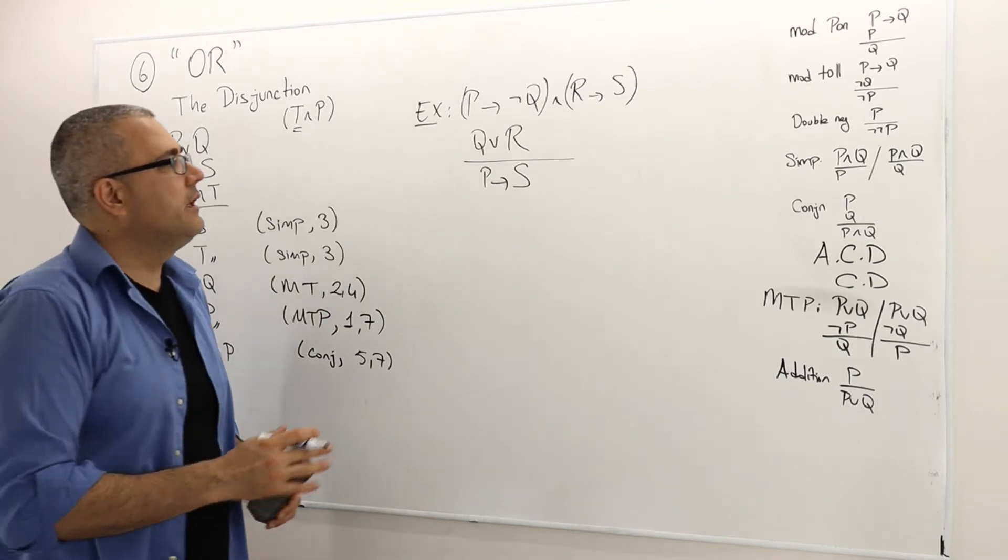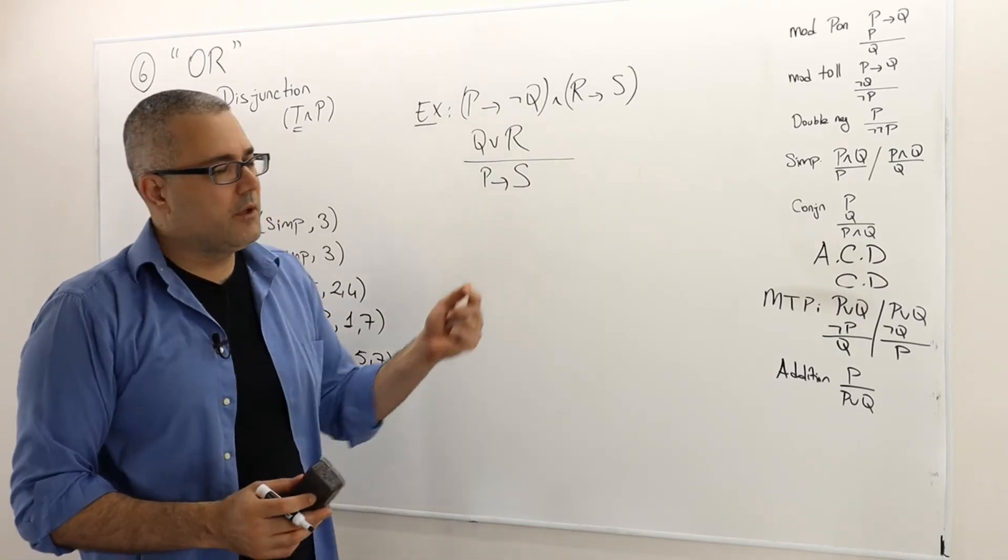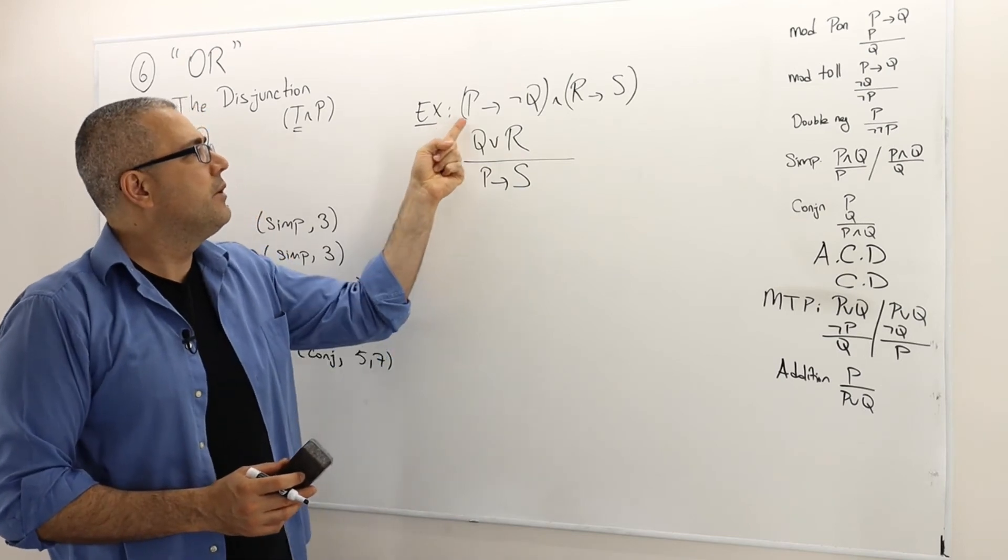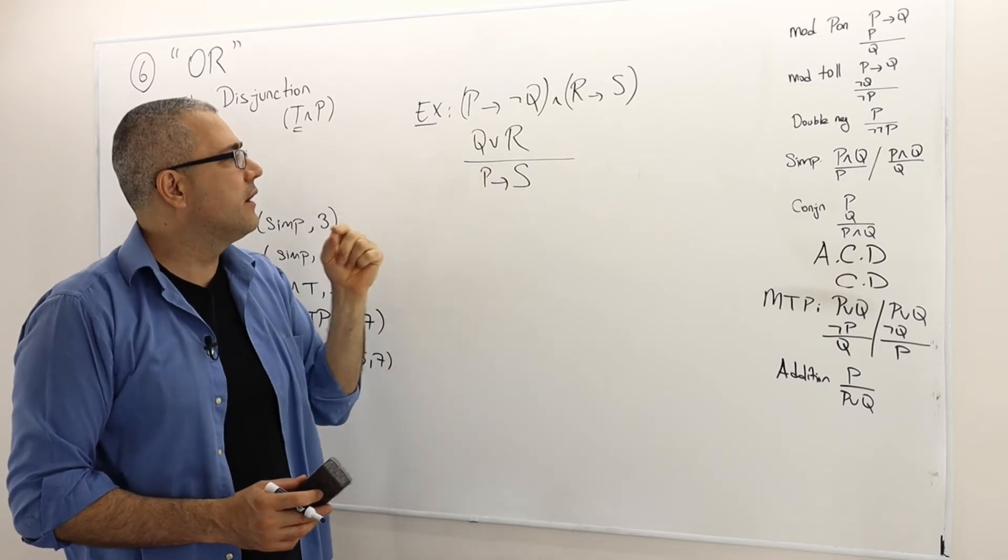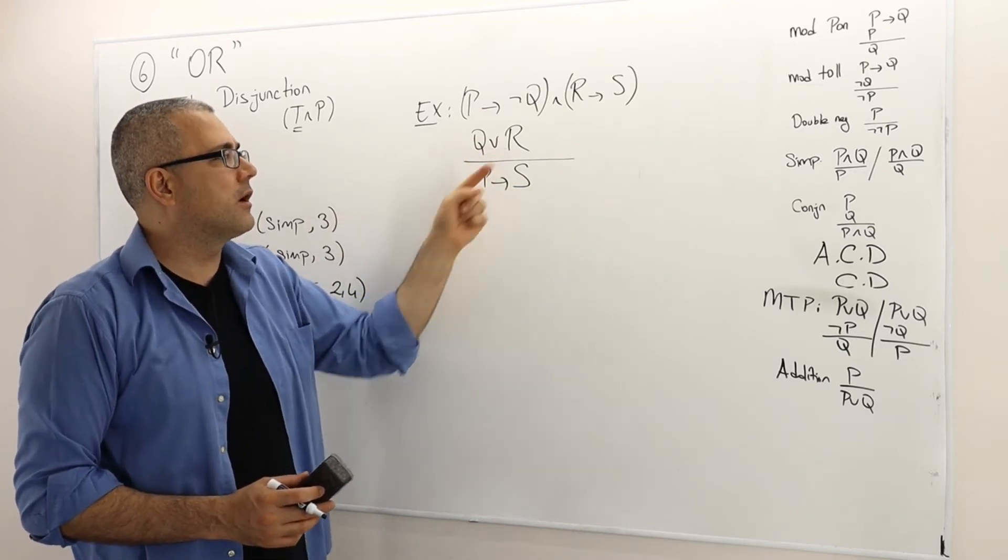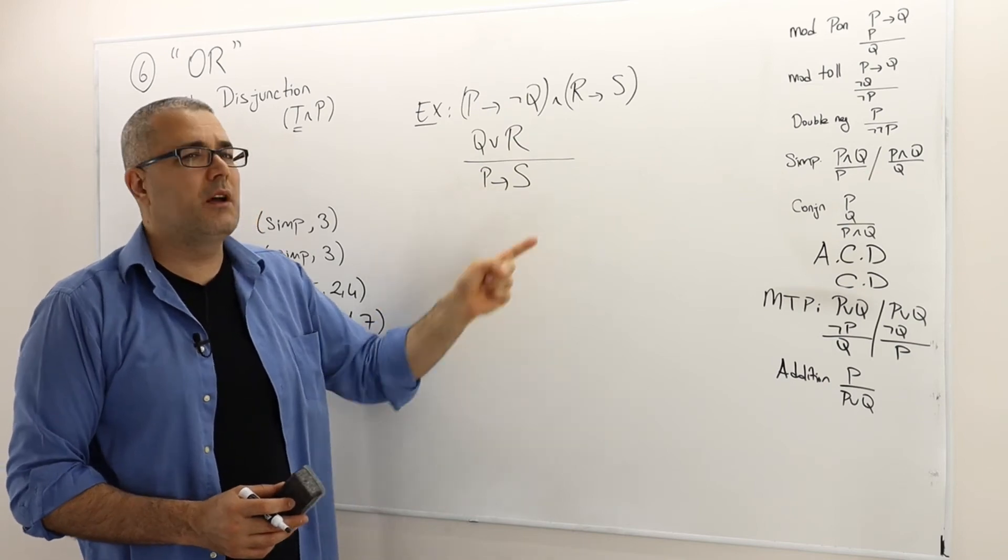Now let's look at the next example. In this example, I have two premises P implies not Q and R implies S. The second premise is Q or R. And then therefore the conclusion is P implies S.